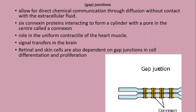Looking at the diagram, there are two cell membranes with channels between them — these channels form the gap junctions. These channels are formed by connexin proteins. Six connexin proteins interact together and form a cylinder with pores in it. Signaling molecules can pass through this channel from one cell to another, mediating cell-to-cell communication.